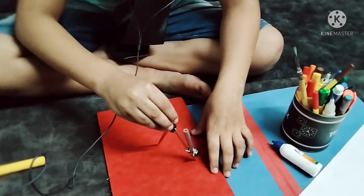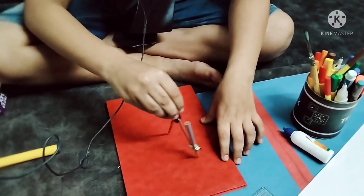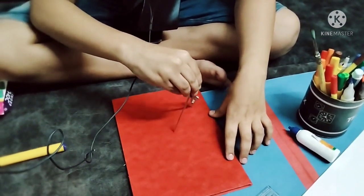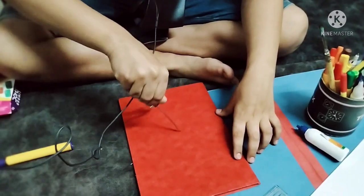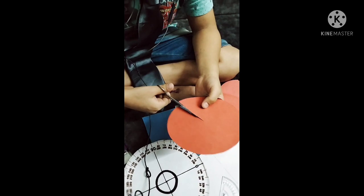Then we draw a circle with 7cm radius. Cut one radius with the small circle.